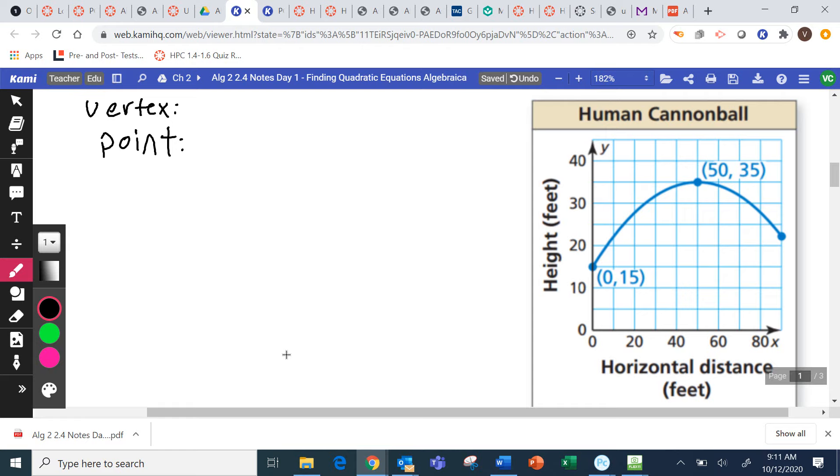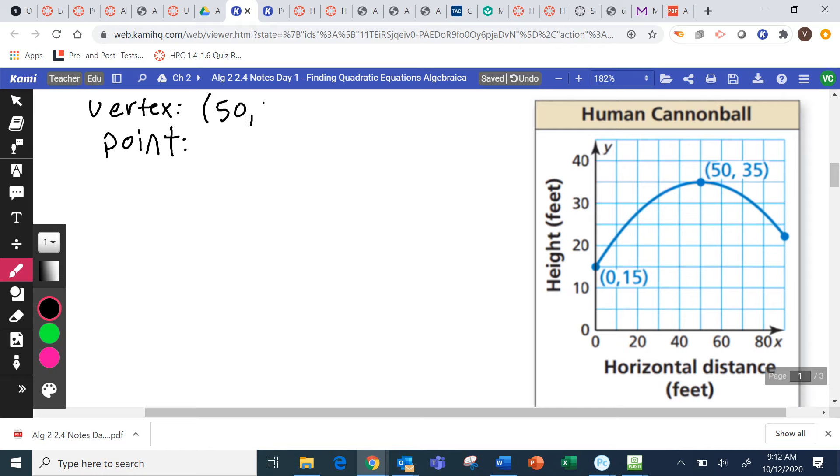So out of those two points, which one of these is the vertex? 50, 35, good. And then the point is 0, 15.